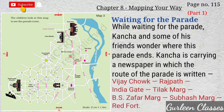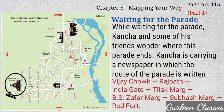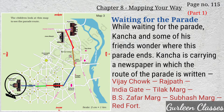While waiting for the parade, Kancha and some of his friends wonder where the parade ends. Kancha is carrying a newspaper in which the route of the parade is written. The route goes: Rashtrapati Bhavan, then Vijay Chowk, then from Vijay Chowk to Rajpath, then from Rajpath to India Gate, then from India Gate to Tilak Marg, then Bahadur Shah Zafar Marg, then Subhash Marg — and here it is Red Fort, which you can see marked with a star.